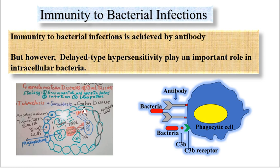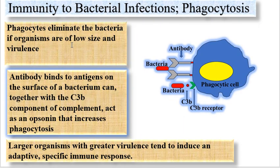This interferon gamma cytokine will recruit more macrophages to the area. These macrophages wall off the remaining bacteria, and these macrophages produce another cytokine known as tumor necrosis factor alpha, which leads to destruction of the surrounding tissue. This may lead to formation of a cheese-like caseous material known as caseation. This is an example of cellular immunity to intracellular bacteria.